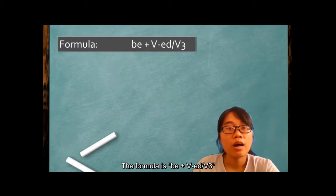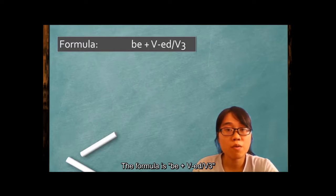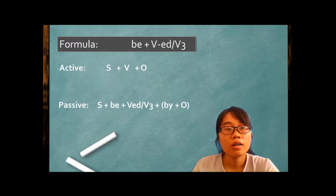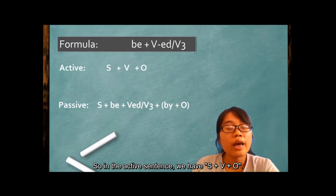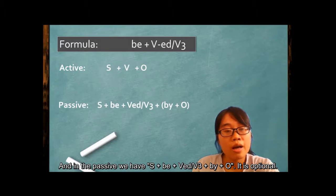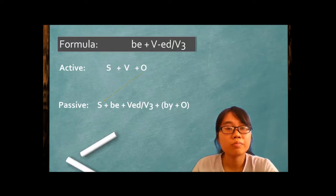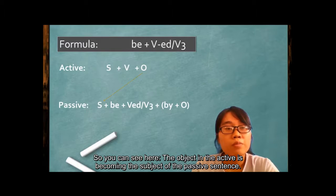The formula here is be plus verb with ED or the past participle of verb. In the active sentence, we have subject plus verb plus object. In the passive, we have subject plus be plus verb with ED or the past participle. So you can see here, the object in the active sentence is becoming the subject of the passive sentence.